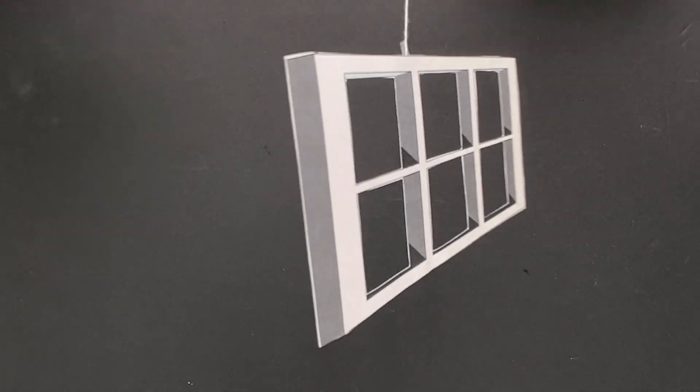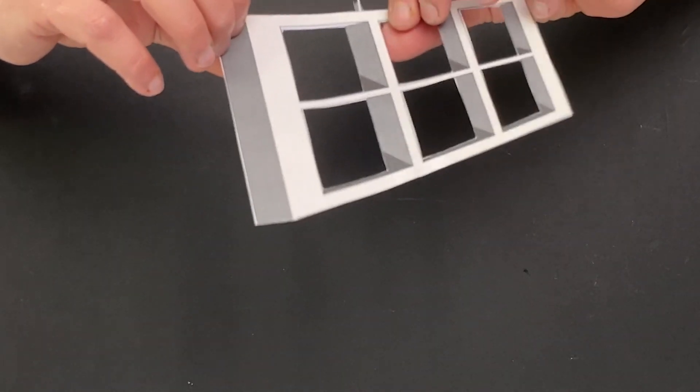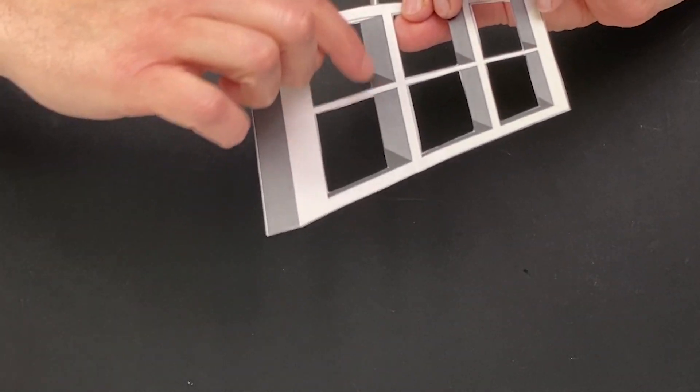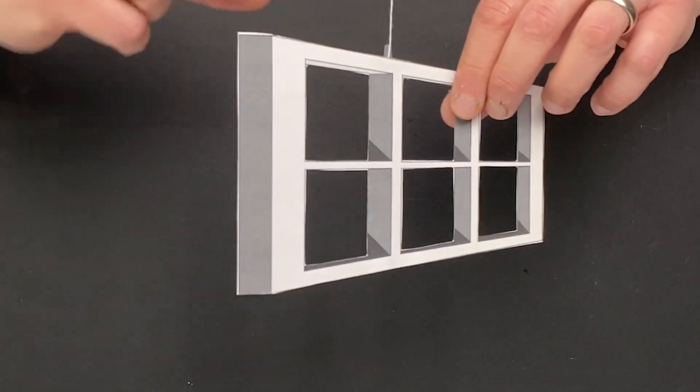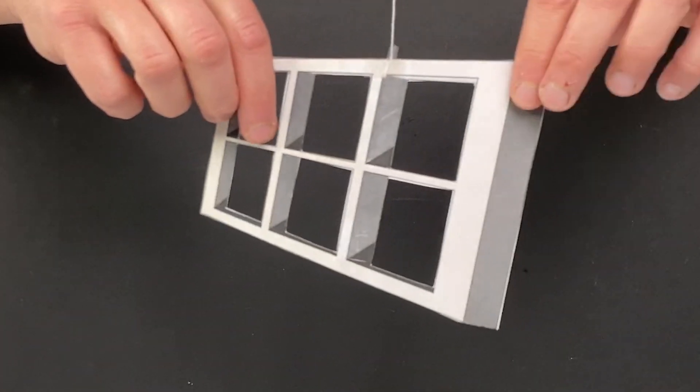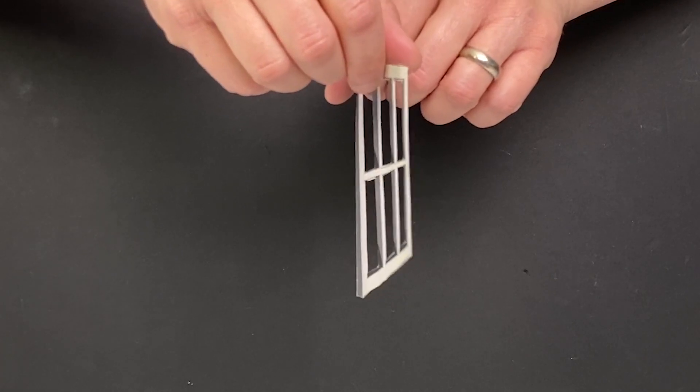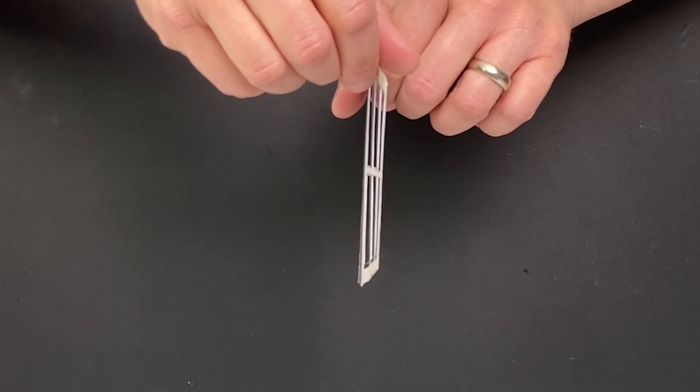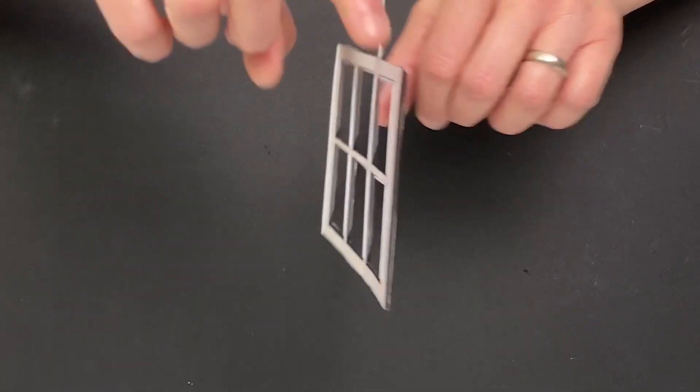And what's going on is this window is shaded and it looks like a real window from this side. And then it looks like a real window from this side. But you can see from head on, it's just a thin sheet of paper that I cut out and prepped for this.